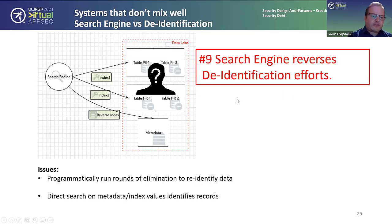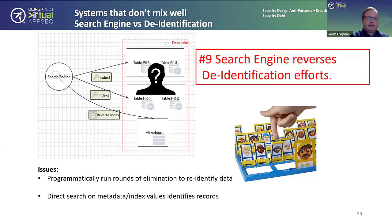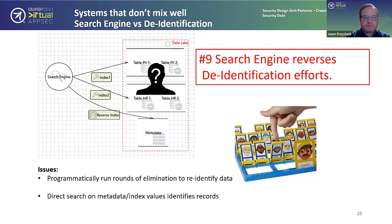The search engine reverses de-identification in certain ways. First, it can programmatically run rounds of elimination to re-identify data — similar to the kids' game 'Guess Who': you eliminate records with certain criteria until you're left with a very small subset you can re-correlate. There's another issue: the search engine may have direct access to metadata and can reverse-index that metadata. For instance, a query saying 'give me all records with an index value between 123 and 127' could re-identify records in that range, especially if the data is still sorted in the back end. Keep this in mind when designing systems that involve a search engine and de-identified data.